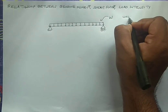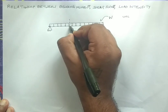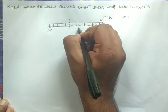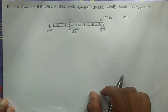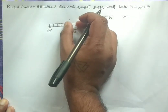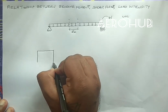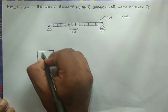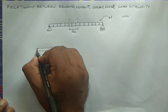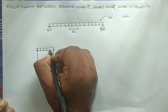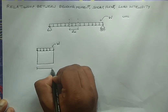To derive the relationship, I take a section of the beam with length DX. We will consider only this section, which is subjected to a uniformly distributed load W acting over the total length DX.